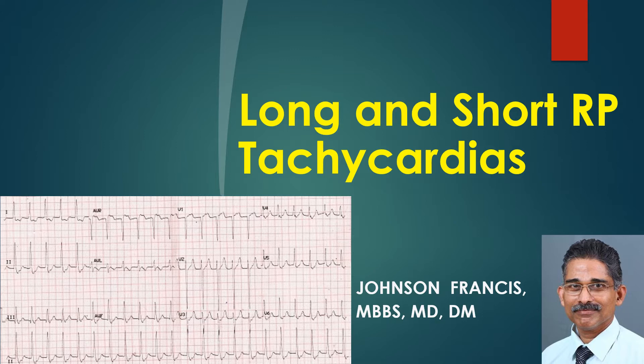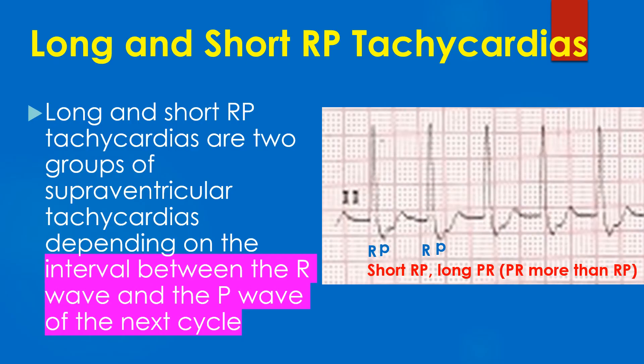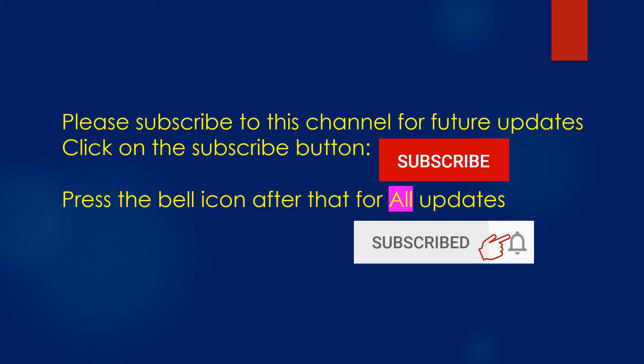This lecture discusses long and short RP tachycardias — a classification of supraventricular tachycardias based on the RP interval. Long and short RP tachycardias are two groups of supraventricular tachycardias depending on the interval between the R wave and the P wave of the next cycle. In the ECG shown here, RP is shorter and PR interval is longer than the RP interval — this is a short RP tachycardia.